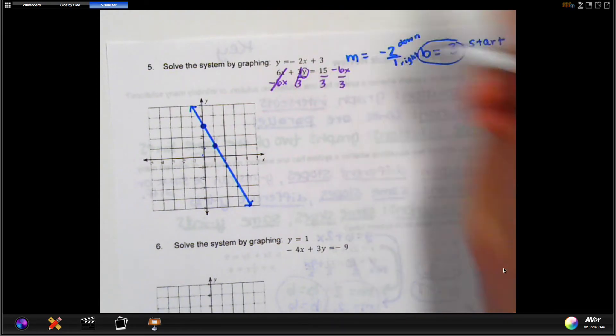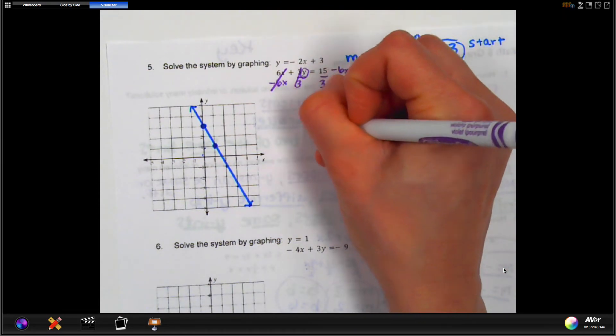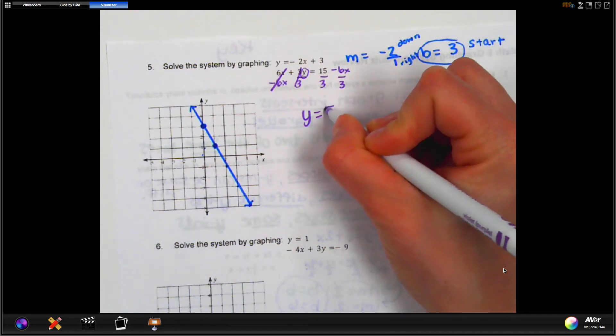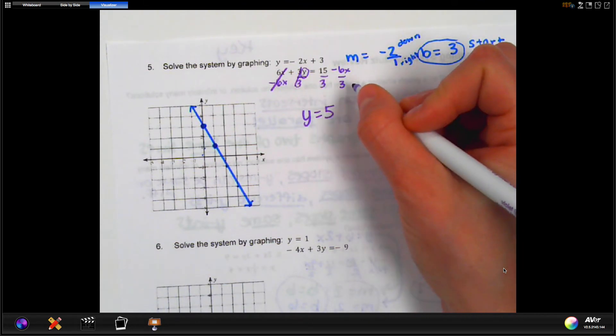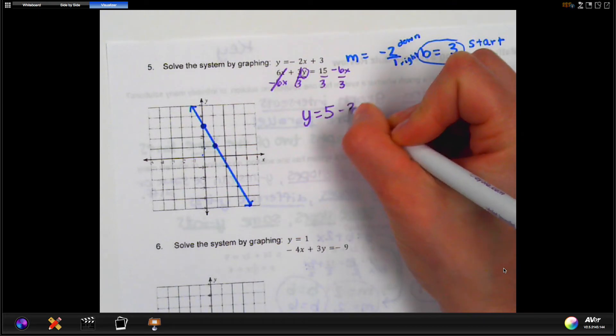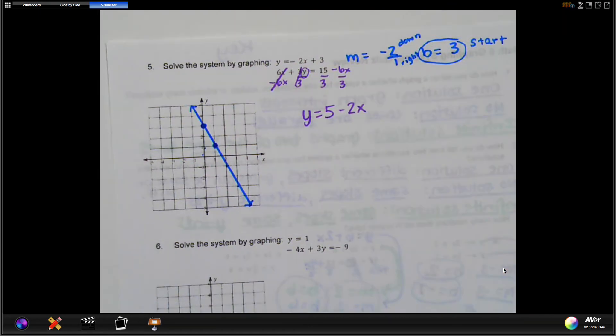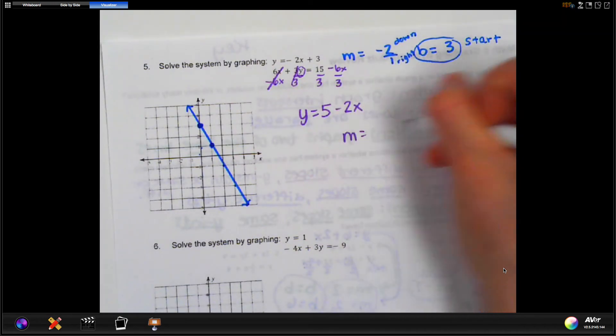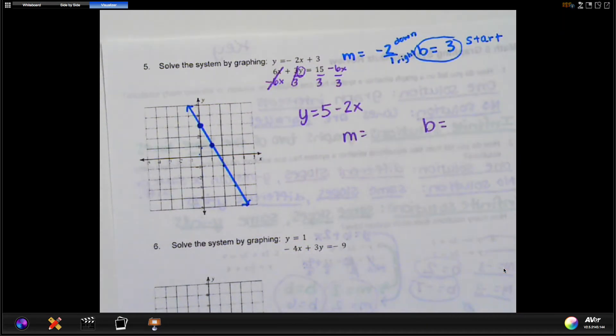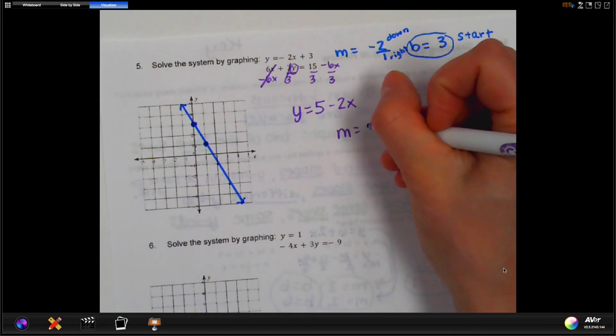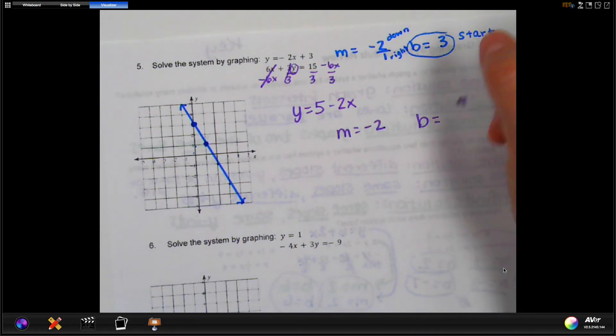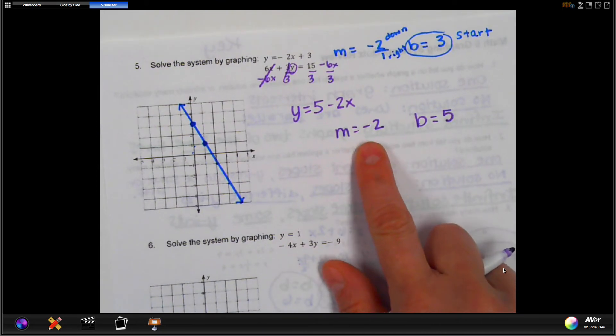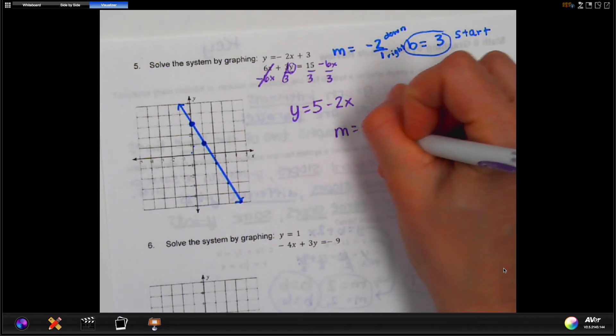Now we're going to rewrite the equation. y equals 15 divided by 3 is 5. Negative 6x divided by 3 would be negative 2x. Now we can use that equation to identify m and b. So again, m is the one next to x, so that's going to be negative 2. And b is the one without the x, so that would be 5. We want that m to be a rise and a run, so we're going to put a 1 underneath.